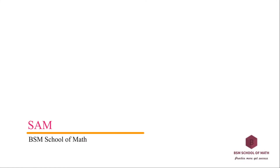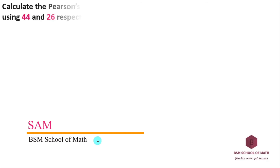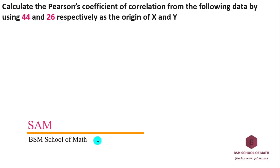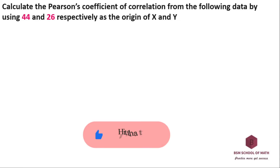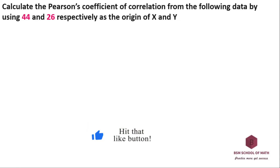Hello and welcome, this is Sam from BSMS Club Math. Calculate the Pearson coefficient of correlation from the following data, by using 44 and 26 respectively as the origin of X and Y.